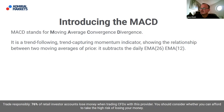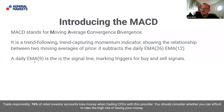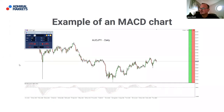What the MACD does is show the relationship between two moving averages of price. Interestingly, it doesn't take a moving average of a moving average — it subtracts one from the other. Specifically, the 26-period EMA is subtracted from the 12-period EMA, which results in a so-called histogram. In addition, there's a 9-period EMA, an exponential moving average, which acts as the signal line marking triggers for buy and sell signals.